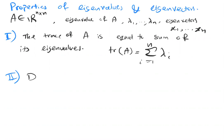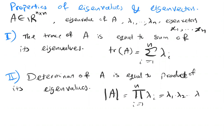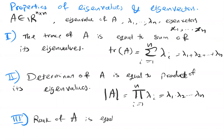Property 2: the determinant of matrix A is equal to the product of its eigenvalues — Π_{i=1}^{n} λᵢ, i.e., λ₁ · λ₂ · … · λₙ. Property 3: the rank of matrix A is equal to the number of non-zero eigenvalues of A.